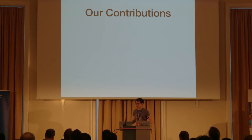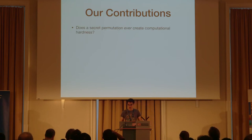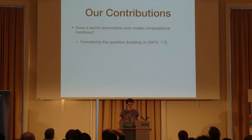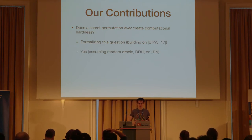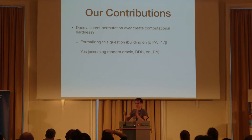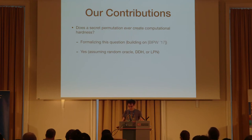For the first question — does a secret permutation ever create computational hardness — we formalize this with what we call permuted puzzles. This builds on the TCC 2017 papers, and we do show that yes, there are examples: permutations can create computational hardness from standard cryptographic assumptions. Although we can't show the PIR scheme is secure from standard assumptions, we can show this general phenomenon happens — based on random oracles, the DDH assumption, or LPN.